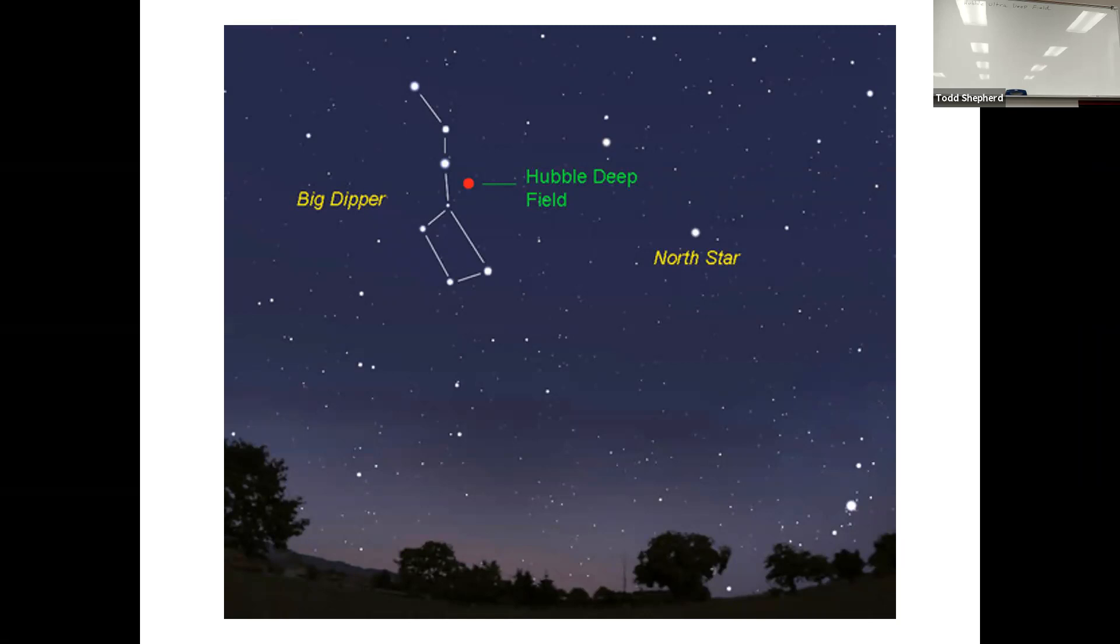NASA wanted to get an estimate of how many galaxies are out there. To do that, they had to pick the deepest, darkest portion of the sky they could find, because they did not want background stars from our own Milky Way galaxy showing up in the picture. The area they picked was very close to the Big Dipper. If you walk outside and look up and find the North Star, the Big Dipper is always just a little to the left. Just above the back part of the ladle is where they aimed the Hubble Space Telescope.